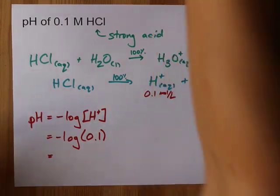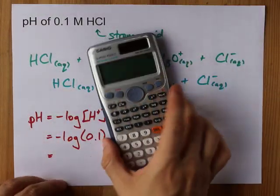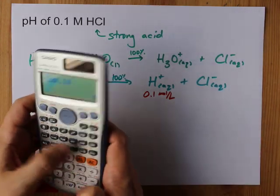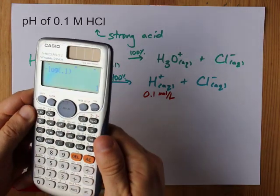And you might be able to do that in your head if you know logs, but if you don't you have a little calculator here. Negative log of 0.1 gives me positive 1.